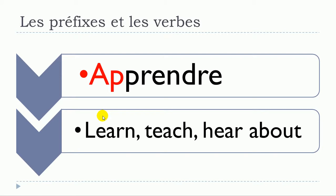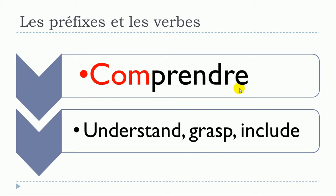Let's see a few examples. The first one: 'AP-' — you will get 'apprendre.' Note that you don't pronounce the double P: 'apprendre.' Here is what it means. It's also possible to put 'COM-' in front of 'prendre' and you will get 'comprendre.'